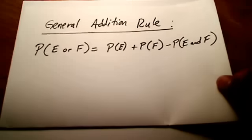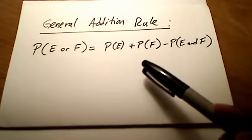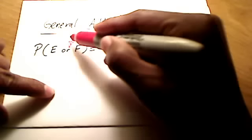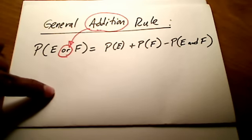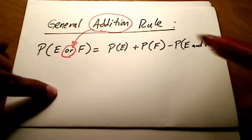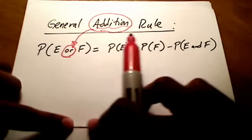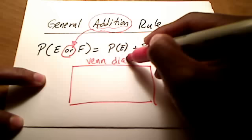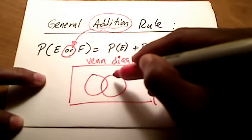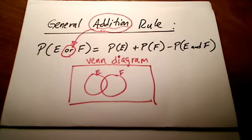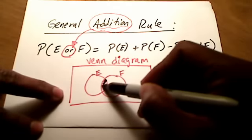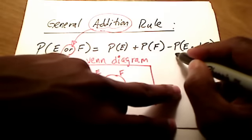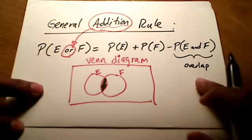The first thing we should know and remember is something called the general addition rule. We call it the addition rule because we're going to use addition any time you see the word 'or.' That's when you know you're going to be using addition, as opposed to the general multiplication rule. To visualize this, consider a Venn diagram with two events, E and F, that overlap a little bit. The section where they both overlap is what's considered the AND — the probability of E AND F. That's where these two intersect each other.